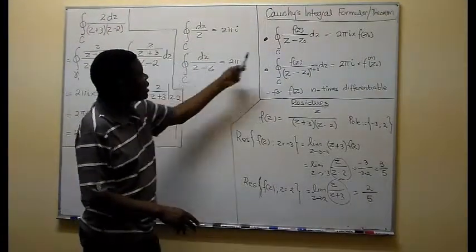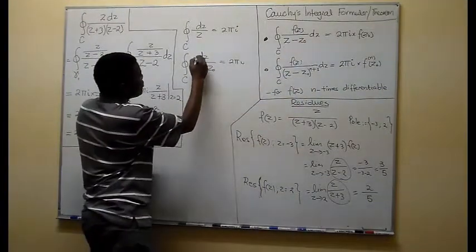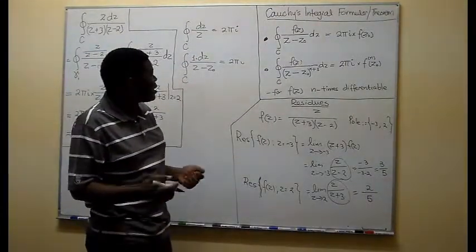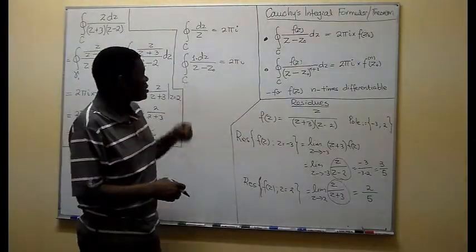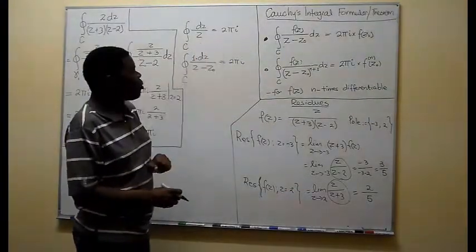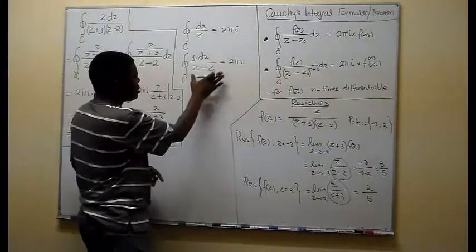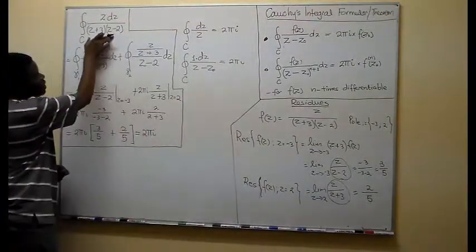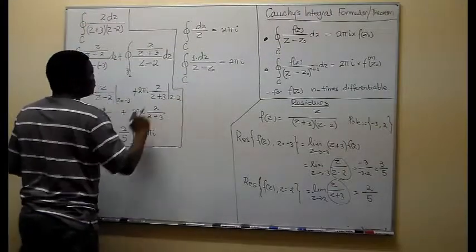But this one also is a particular case of this Cauchy integral formula whereby our f(z) is equal to 1, and 1 constant function is analytic in and on any curve, in any region of the complex plane. So what we saw before here was a particular case of that. But what we did, remember, when we had an expression like the one we have here, we tried to resolve it into partial fractions and then integrate it this way.